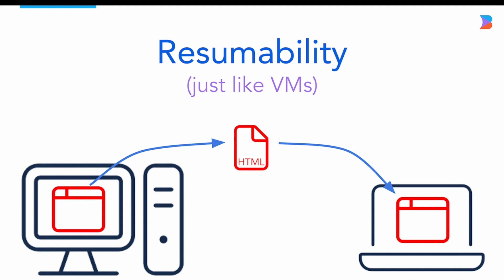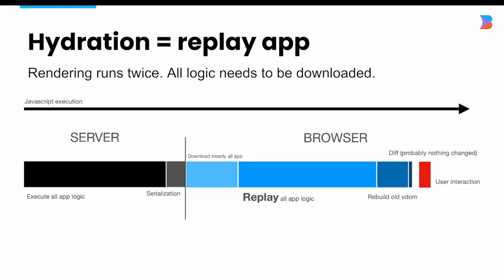Hydration is entirely different — the application needs to run twice: once on the server and then once on the browser. After the server renders HTML and ships it to the browser, the client has to replay everything the server already did. It needs to again execute the application, download the app's JavaScript, replay the app logic, rebuild the VDOM, and diff the VDOM — all before user interaction can start. This is why we call it replayable and not resumable.